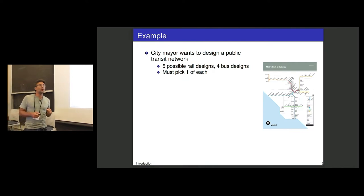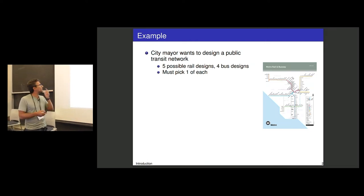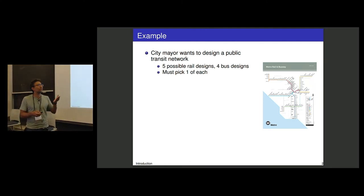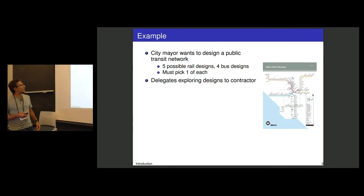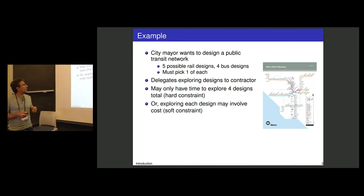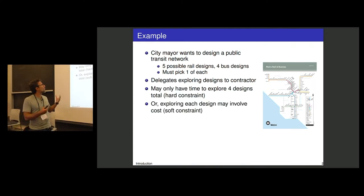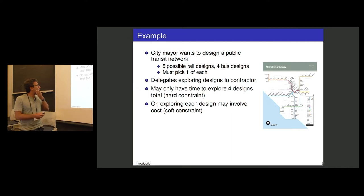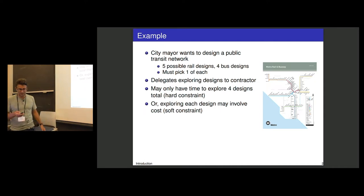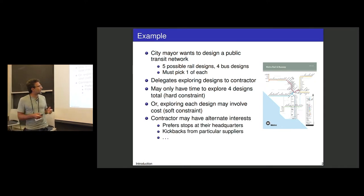Let's look at an example. Say you're a mayor wanting to design a public transit network consisting of a rail network and a bus network. You must pick one of each — say there are five possible rail designs and four bus designs. You might delegate exploring these designs to an expert contractor. However, there may be constraints on exploration: hard constraints such as only being able to evaluate four designs in total, or soft constraints in the form of a known probing cost per design.